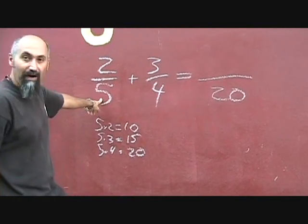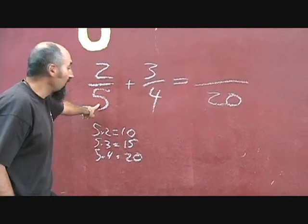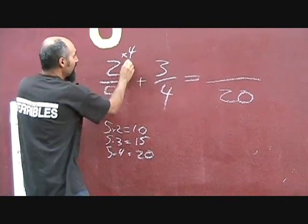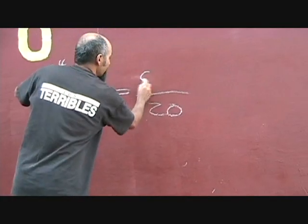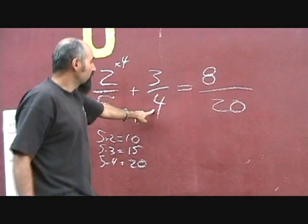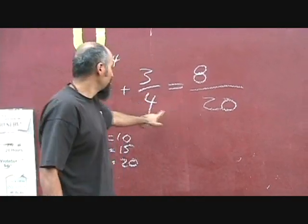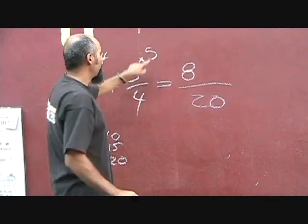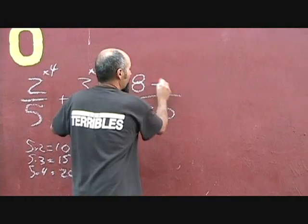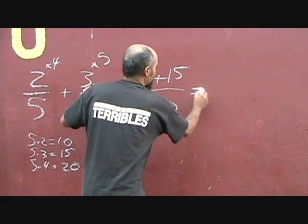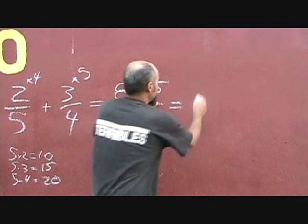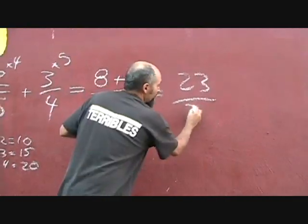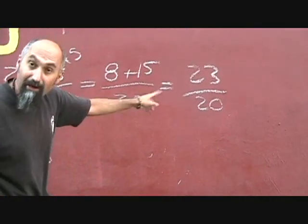Now what did you multiply 5 by to give you 20? You multiply 5 by 4, so you multiply the top by the same number. So 2 times 4 is 8. What did you multiply 4 by to give you 20? You multiply 4 by 5, so multiply top by the same number times 5. 5 times 3 is 15, so plus 15. 8 plus 15 is 23 over 20. That's how you add fractions.